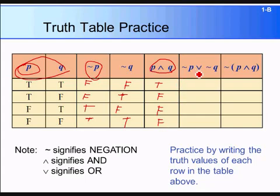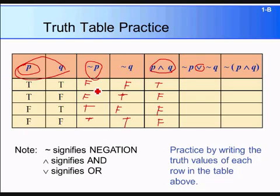Now for not P or not Q, we use disjunction. Remember disjunction is only false when both values are false. In the first row, both not P and not Q are false, so that column is false. The rest of the rows are true, true, and true.